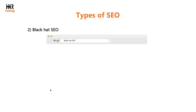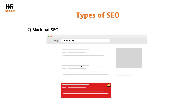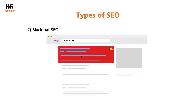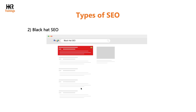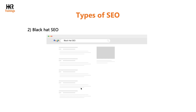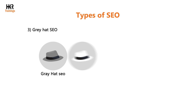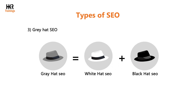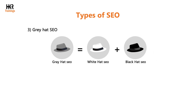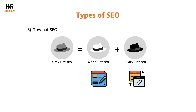Black hat SEO goes against the guidelines set by search engines and manipulates them to achieve higher rankings. It can result in being completely removed from search results or gaining a lower ranking. Gray hat SEO is the combination of SEO methods that both follows and violates Google's Webmaster Guidelines. An example of gray hat SEO is creating high-quality content and purchasing backlinks to it.